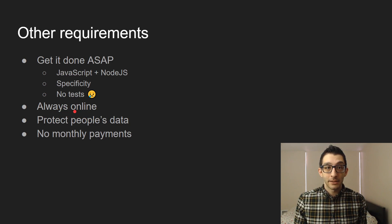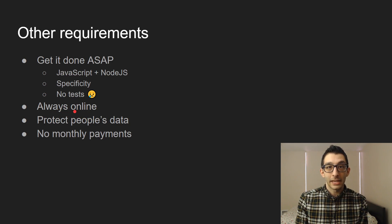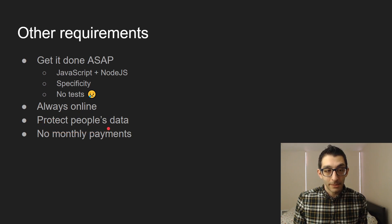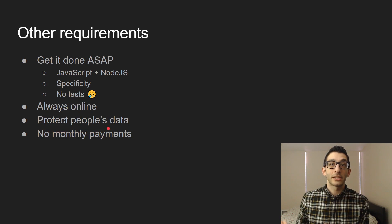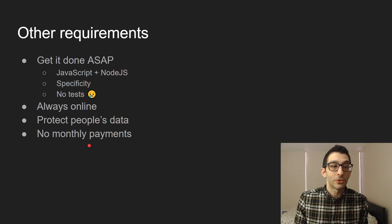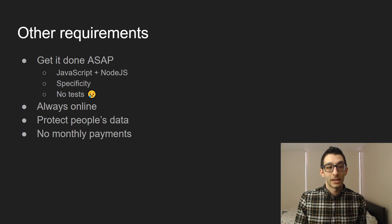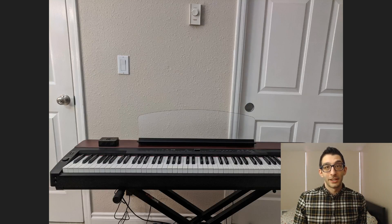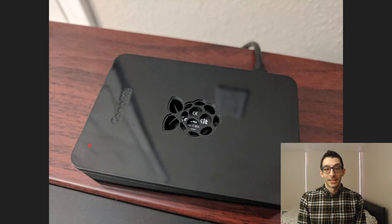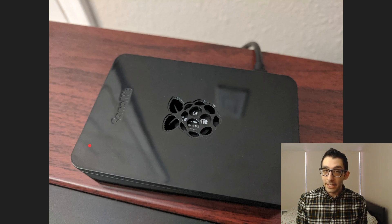The bot always needs to be online — if you paid money and I don't happen to be streaming at the time, I think you should still get access to those perks. I wanted to protect people's data, meaning you should be able to delete your data and you shouldn't be able to see what other people subscribed at. And finally, I didn't want monthly payments to maintain this bot myself, which meant I wasn't going to get a DigitalOcean droplet or pay for cloud service. So I ended up hosting it on a Raspberry Pi. I bought one, set it up, and it's working great.